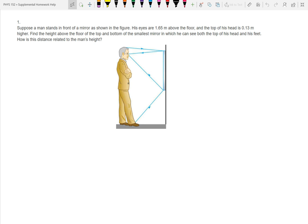Suppose a man stands in front of a mirror as shown. His eyes are 1.65 meters above the floor. So the first piece of information is 1.65 meters is that distance. And the top of his head is 0.13 meters higher. Okay, so those are our numbers.